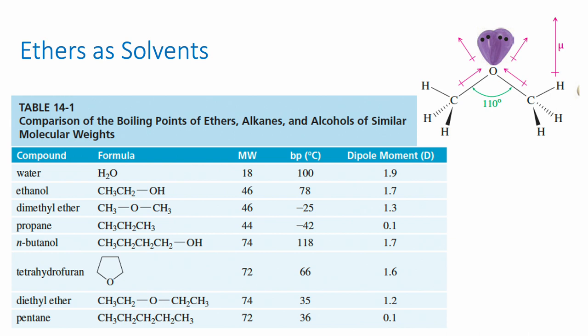Here we can see a comparison of the boiling points of alcohols, alkanes, and ethers as a function of their polarity. Water is highly polar because it has two oxygen-hydrogen bonds, which allows it to engage in hydrogen bonding. Ethanol has one oxygen-hydrogen bond, so it's still fairly polar, but not as polar as water, so its boiling point drops to 78°C. If we compare ethanol and dimethyl ether, we see that the ether has a far lower boiling point.